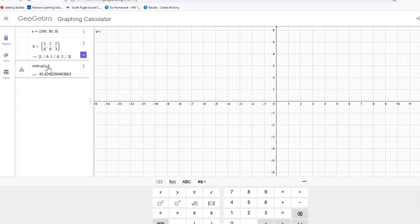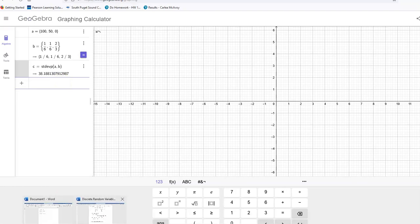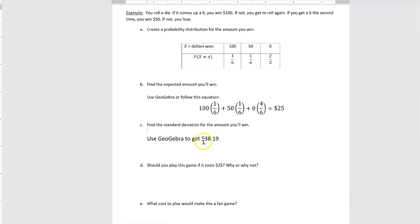And so I'm going to put in A comma B, enter, and that gives me 38.18813, pretty long. Depending on where you're asked to round that to would be what you would put as an answer. So let's go back here and see that I rounded it to $38.19, because when we're talking about money, we usually use two decimal places or the hundredths place. So the expectation is you would win $25, but you could be $38 less than that or $38 more than that on average.